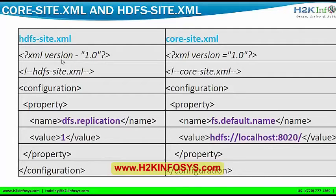Every property will be included in two tags called 'configuration' and 'property'. Whatever you want to declare, you have to declare inside a configuration tag and then a property tag should be given. If you see here, a sample hdfs-site.xml is given where I am declaring the replication factor. By default it would be three, but if I want to change my replication factor to one, this is how I have to give it in my hdfs-site.xml. The replication name will be written as 'dfs.replication' and the value would be one — because I am going to install it in pseudo-distributed mode.